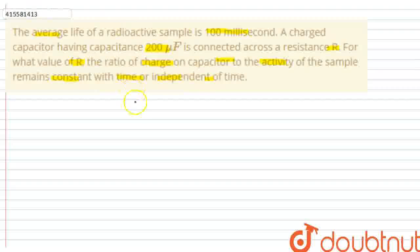So here we have given the average life. The average life of a radioactive substance T_A, it is denoted by 1 over lambda. It is 100 milliseconds. Okay.